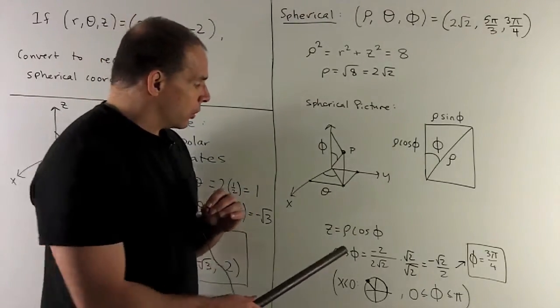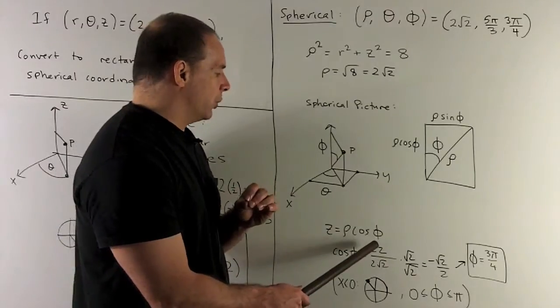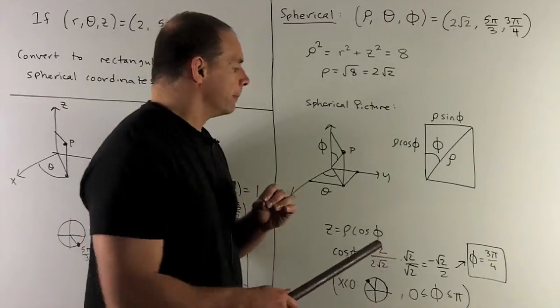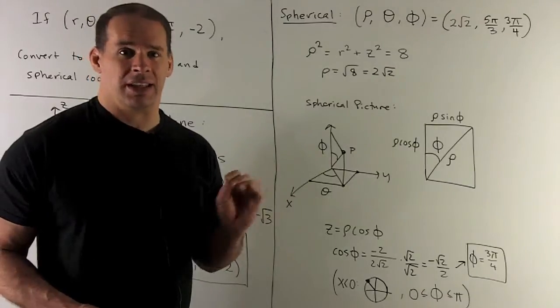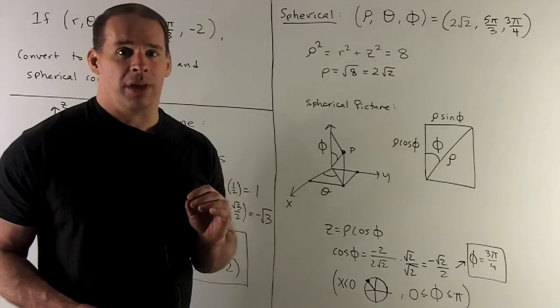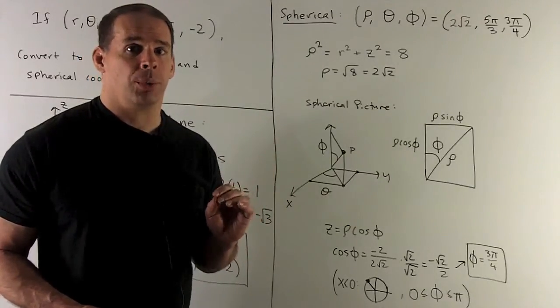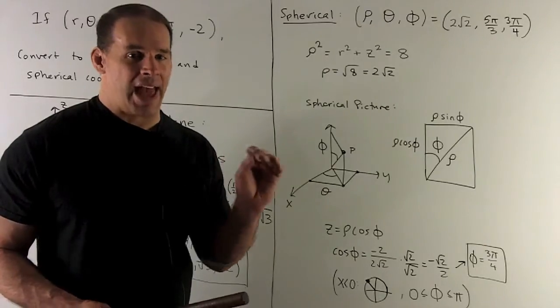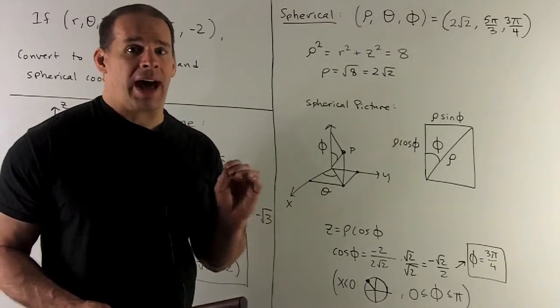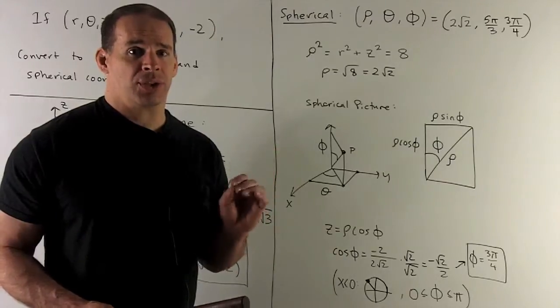What do we get? Cosine phi is minus 2 over 2 square root of 2. I'm going to multiply by square root of 2 over itself to clean things up. We're going to wind up with minus square root of 2 over 2.